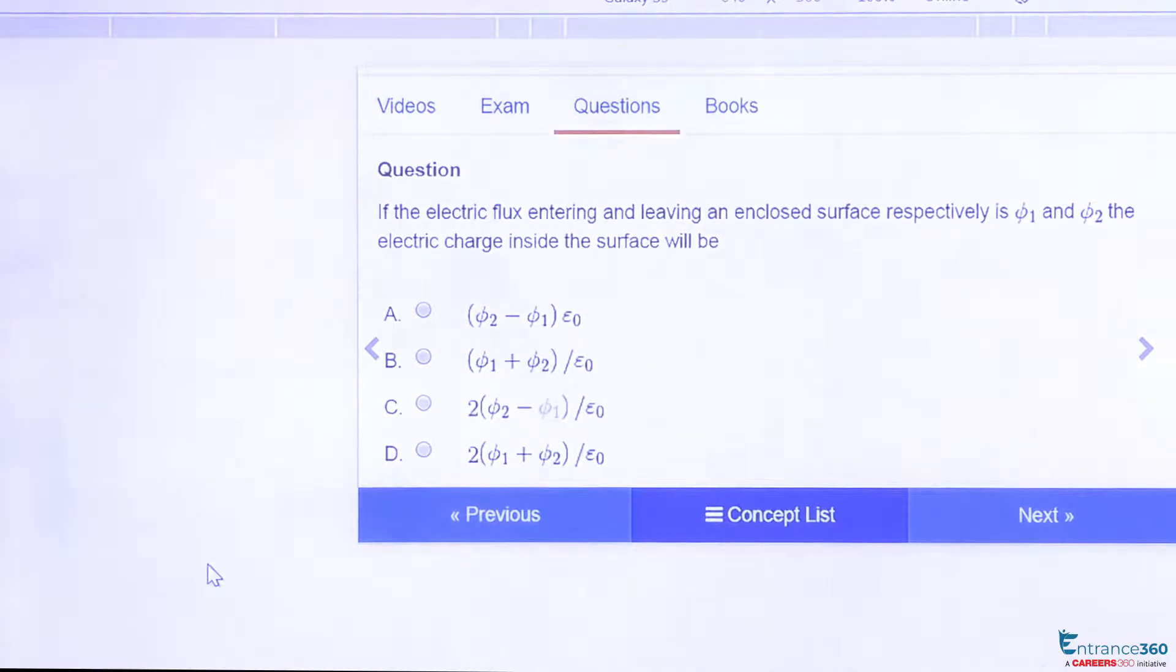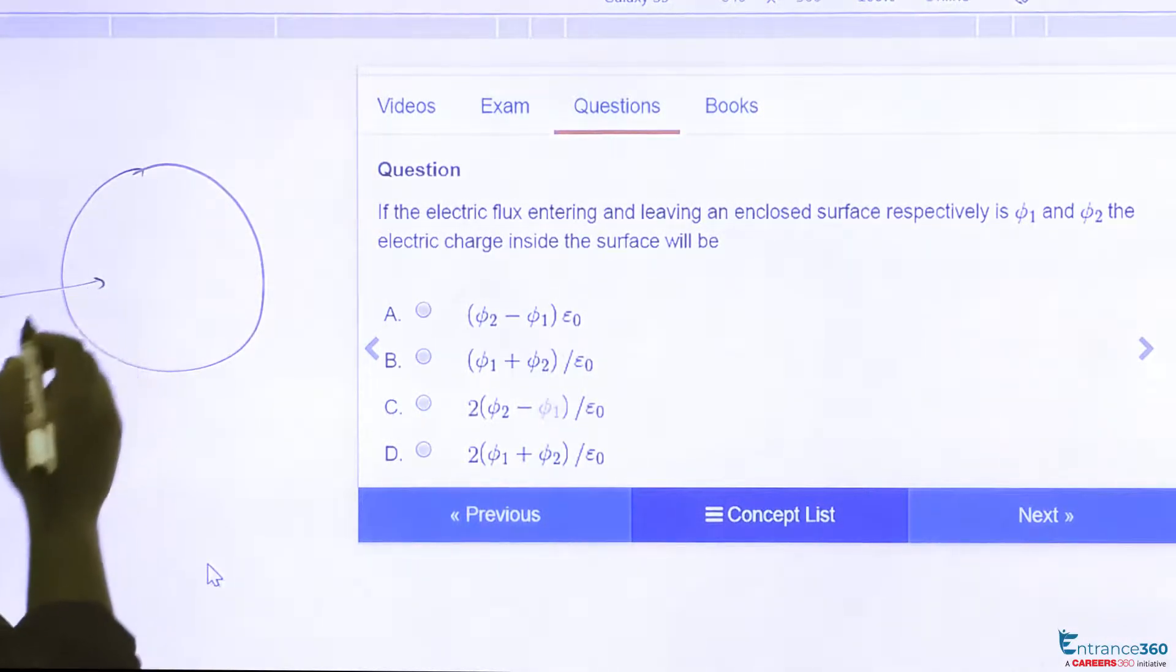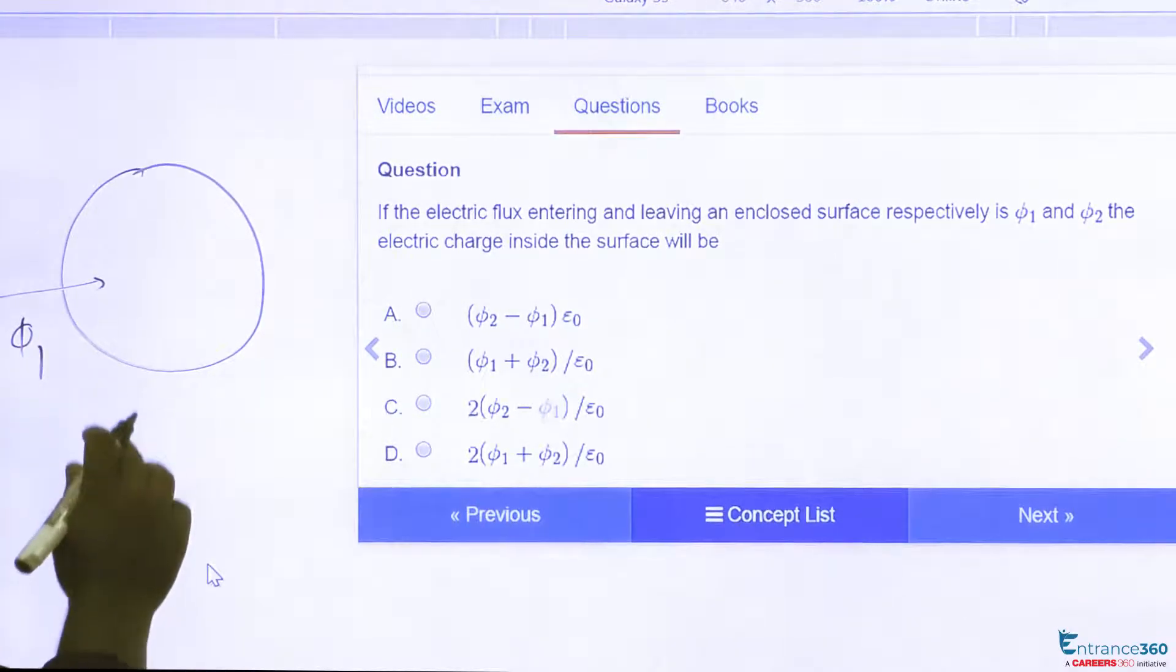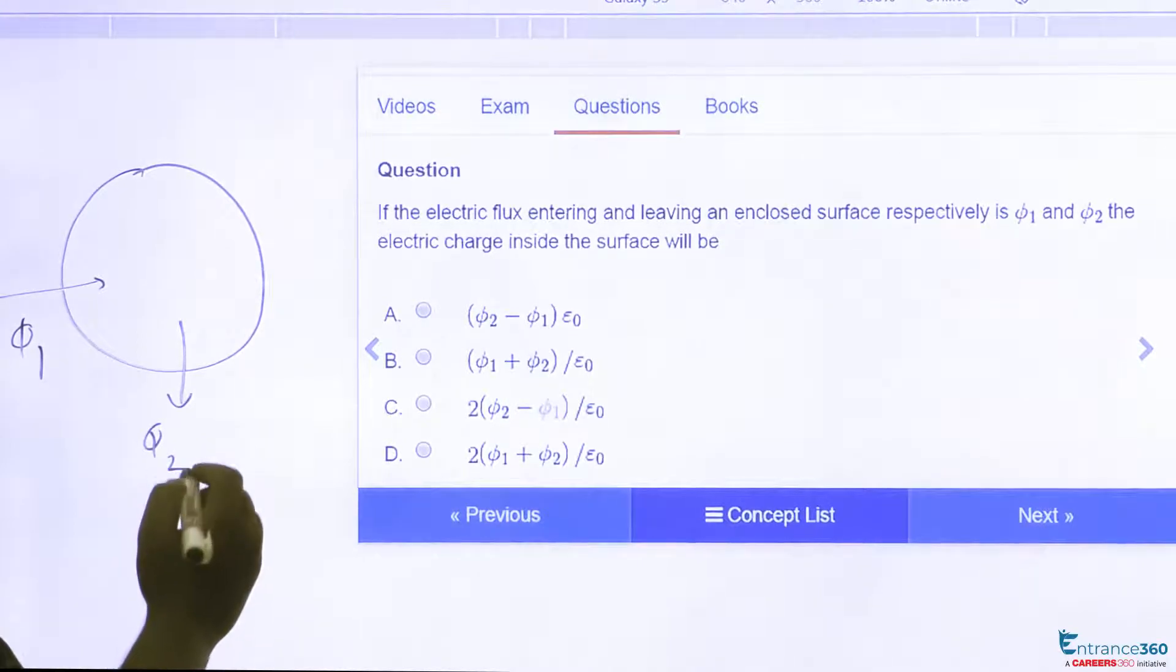The question says electrical flux entering and leaving an enclosed surface are given. Let this be an enclosed surface, then phi1 is electrical flux entering and phi2 is electrical flux leaving the surface. We want to find out the charge inside the surface.